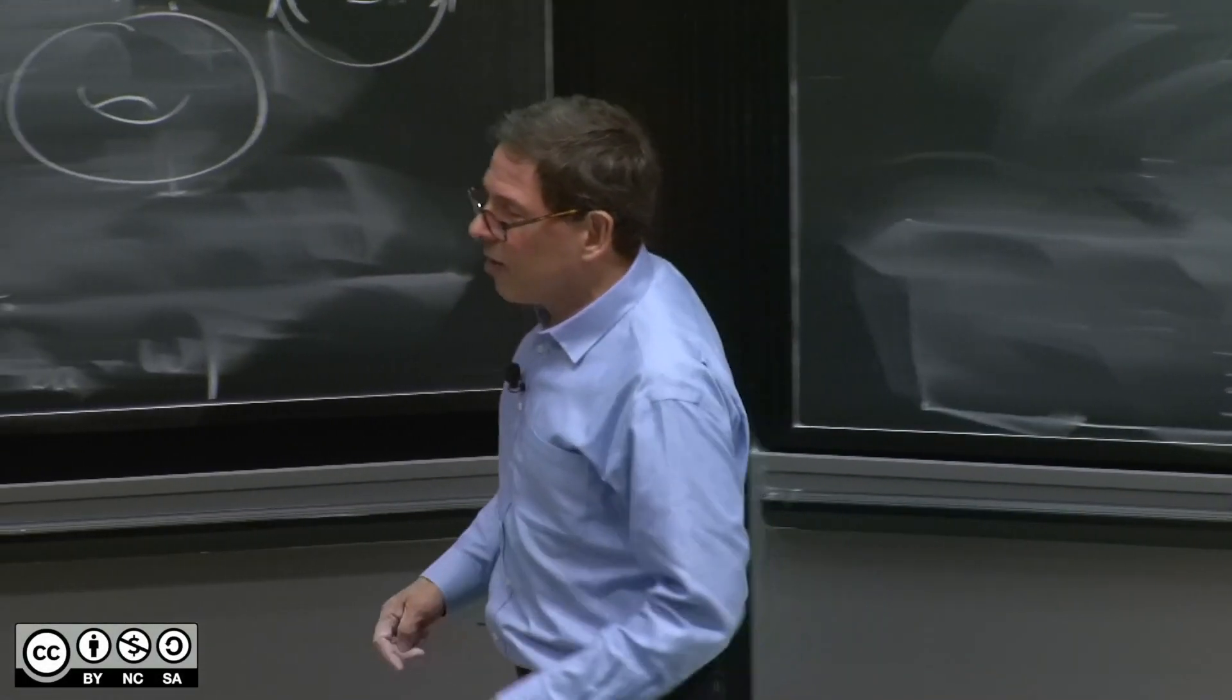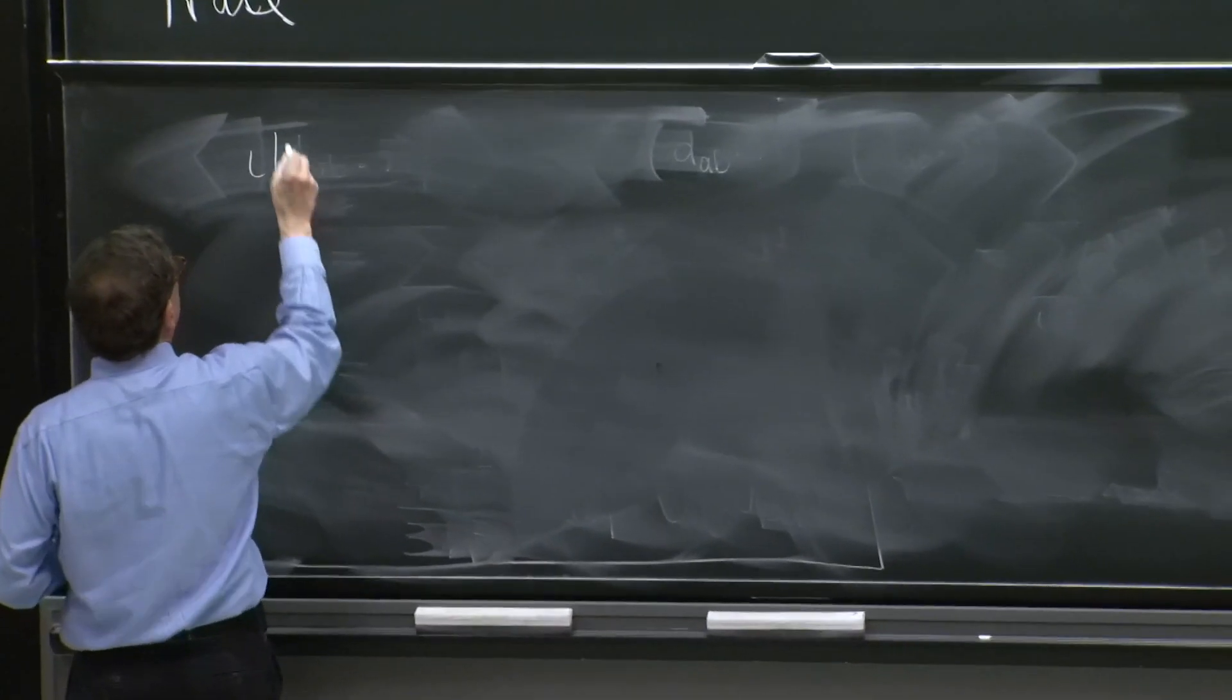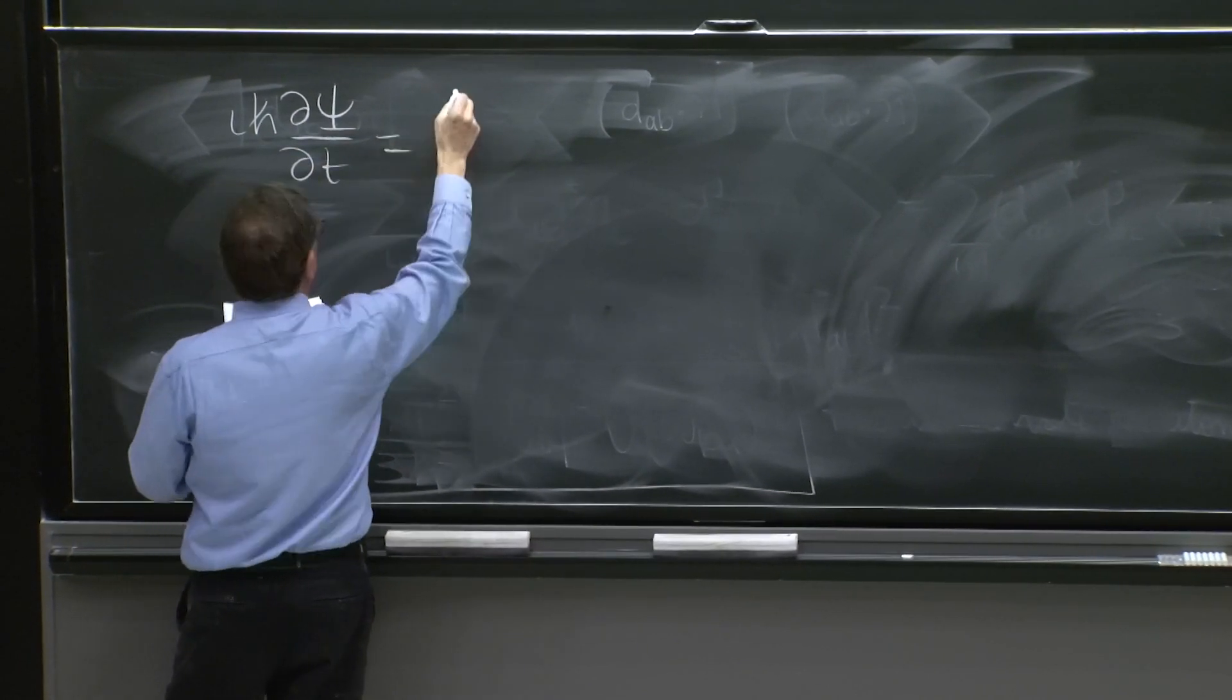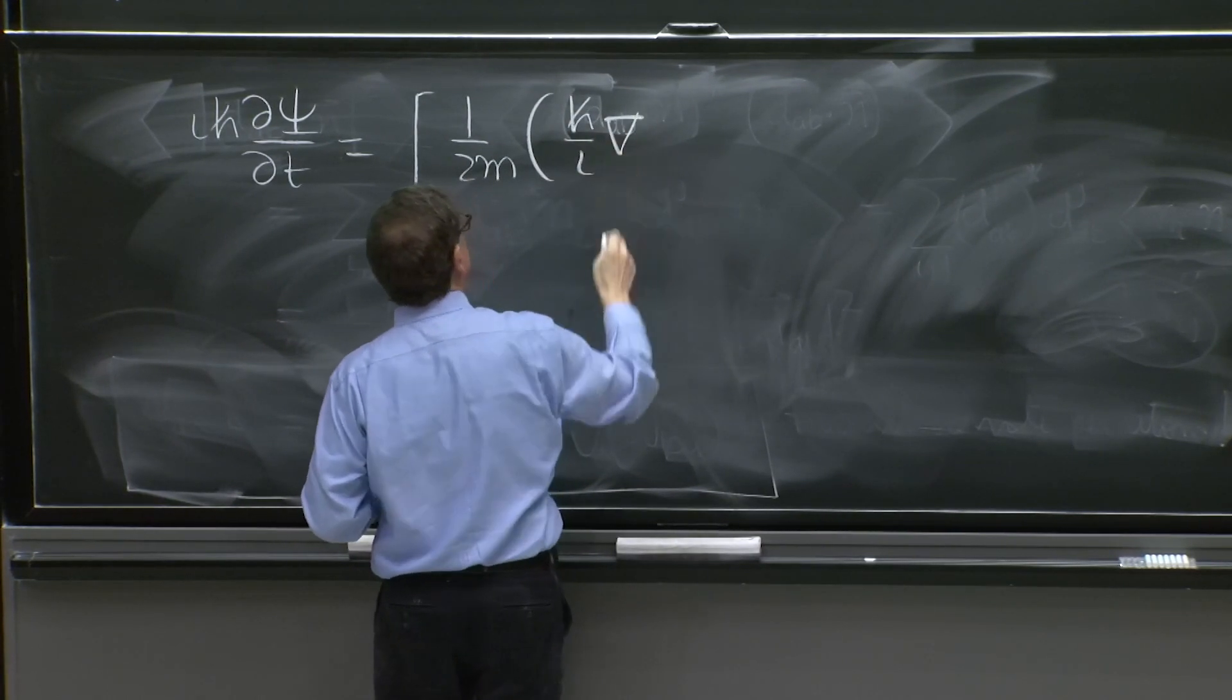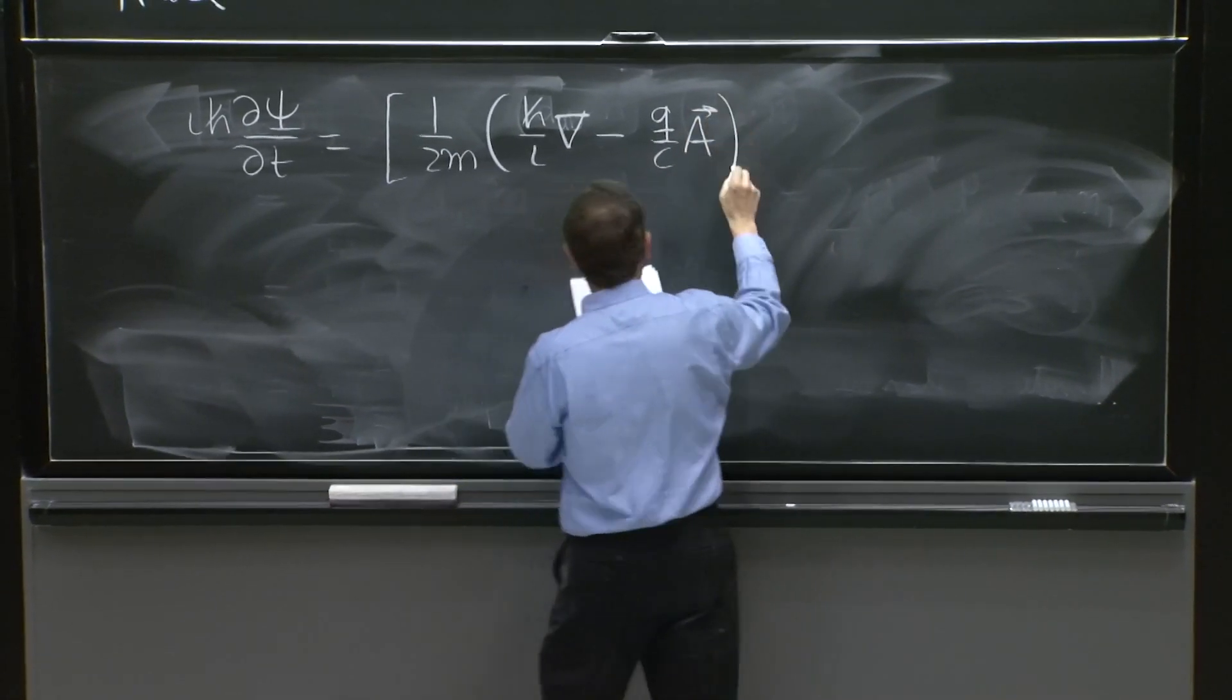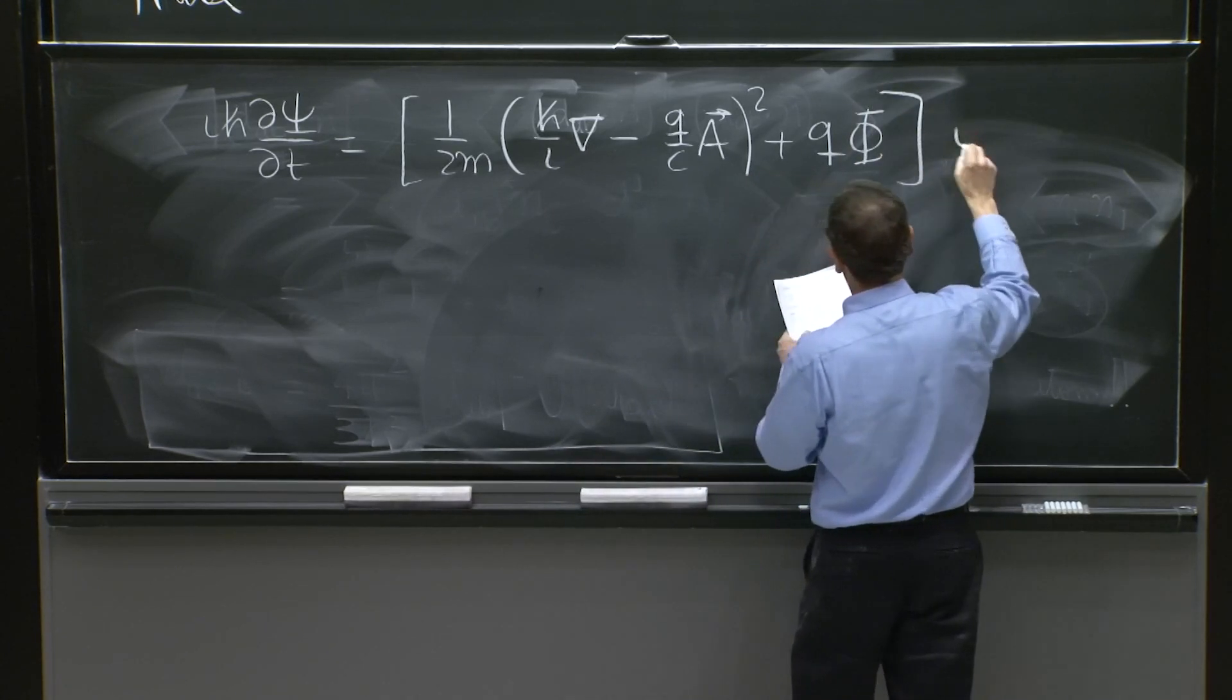OK, so what is our Schrödinger equation, therefore? Our Schrödinger equation is i ℏ ∂ψ/∂t equals 1 over 2m times (ℏ/i ∇ - q/c A)² plus qφ on ψ.